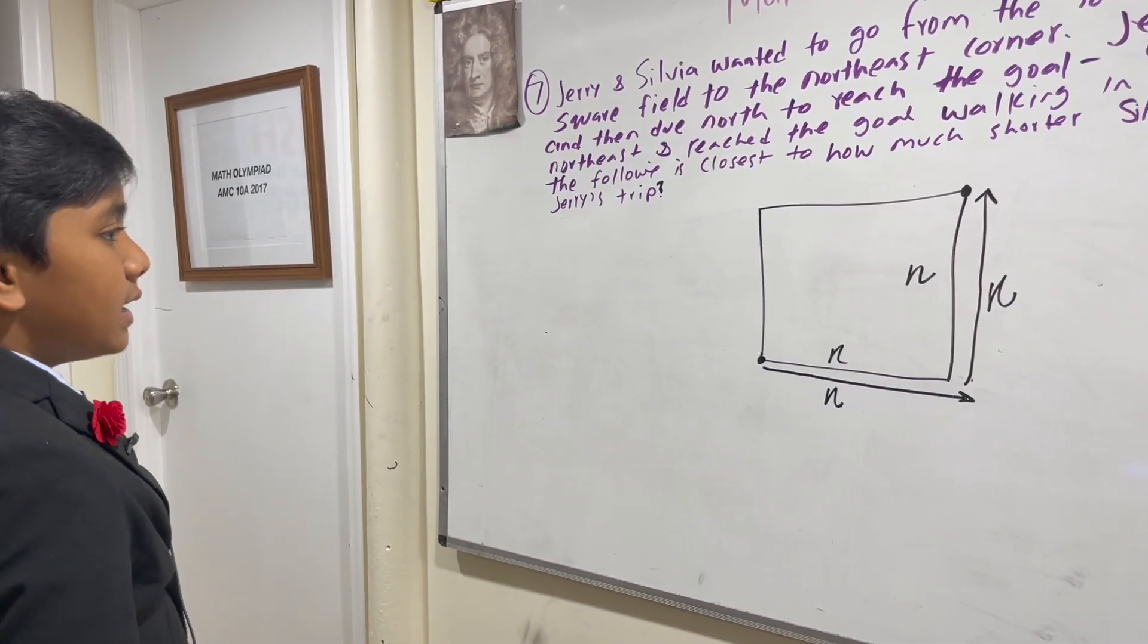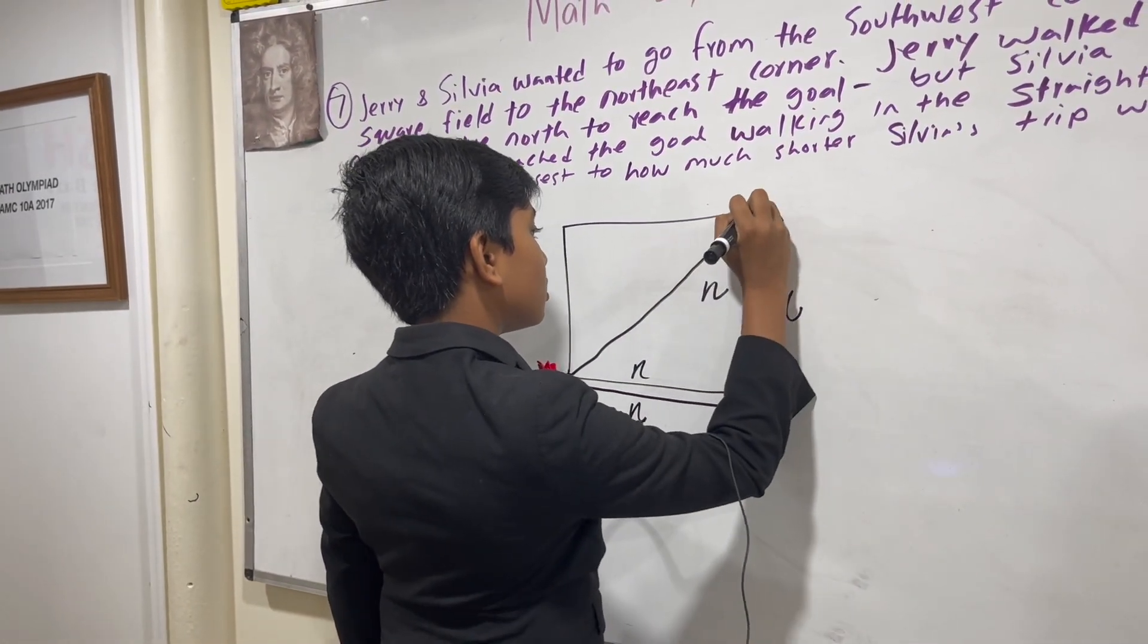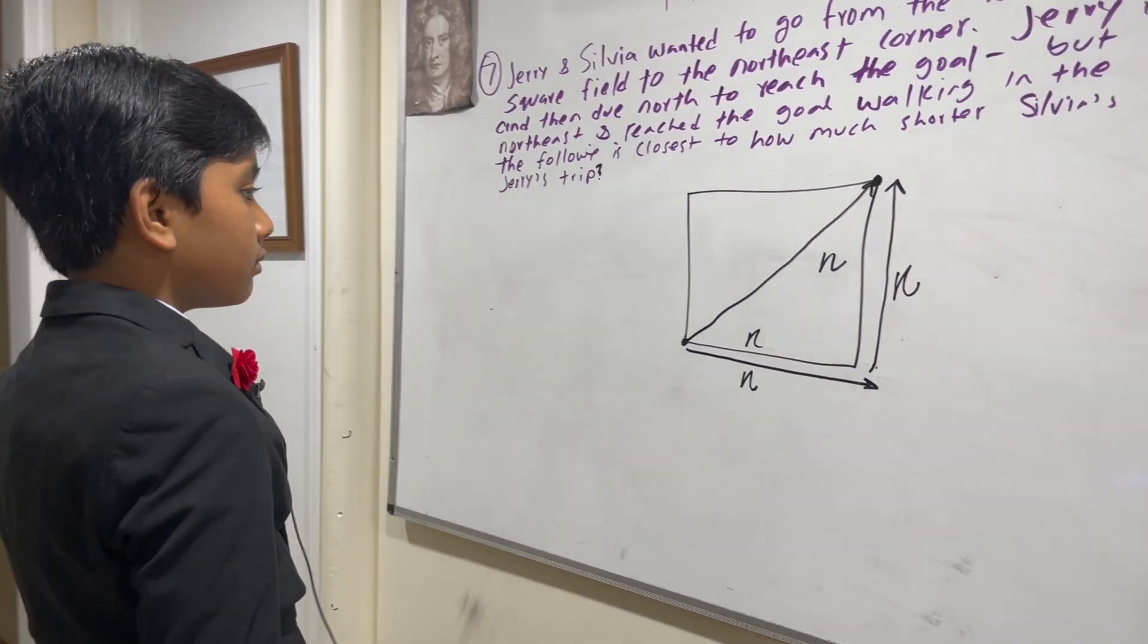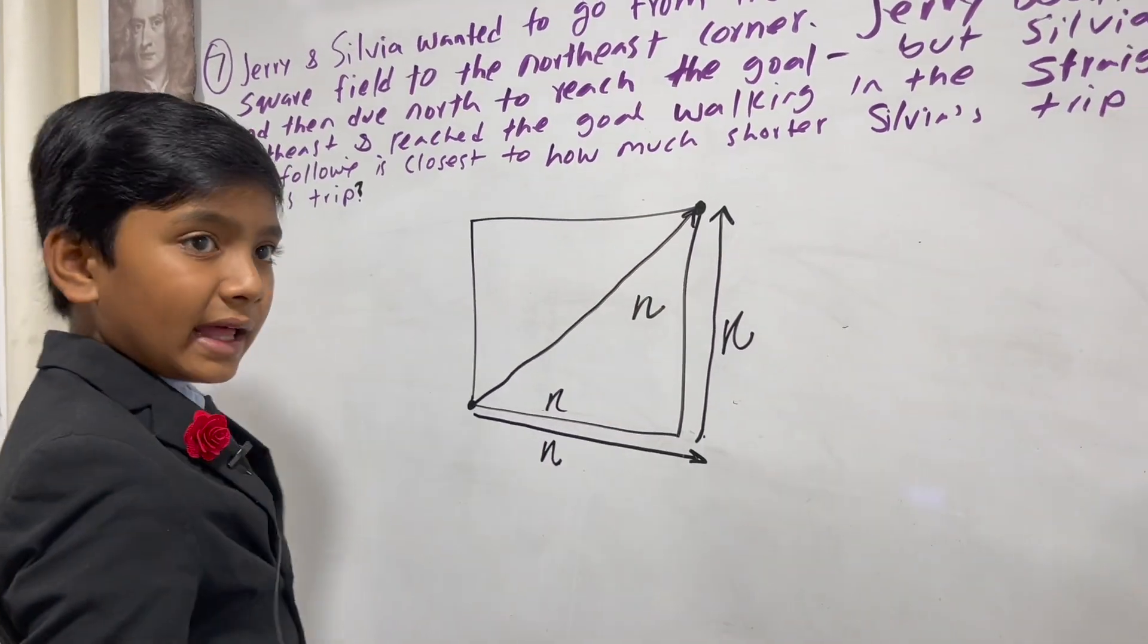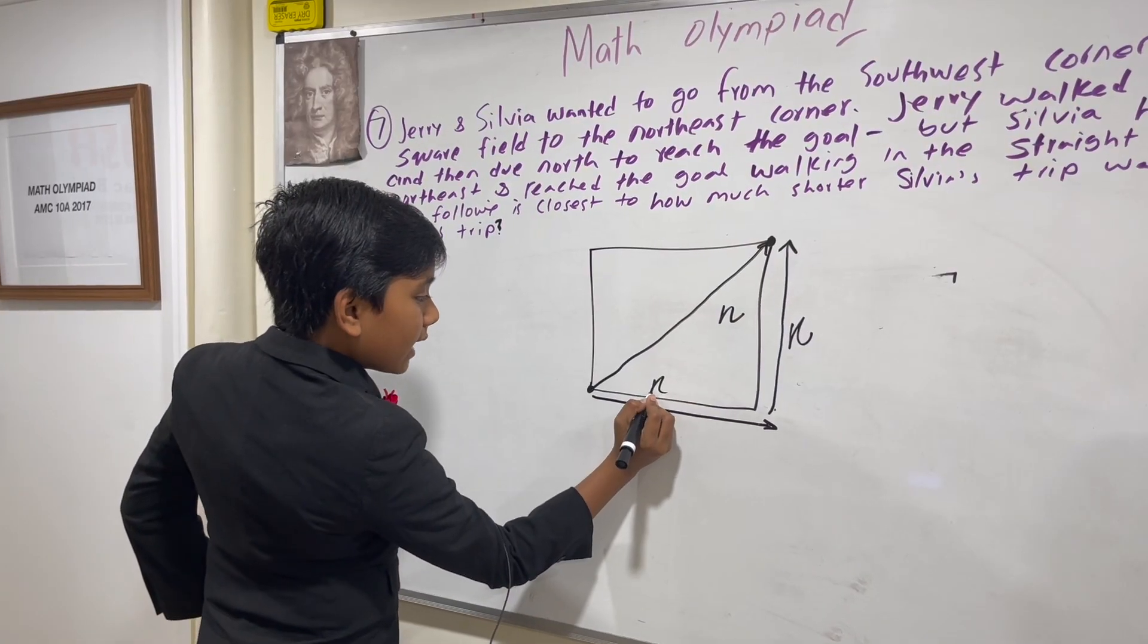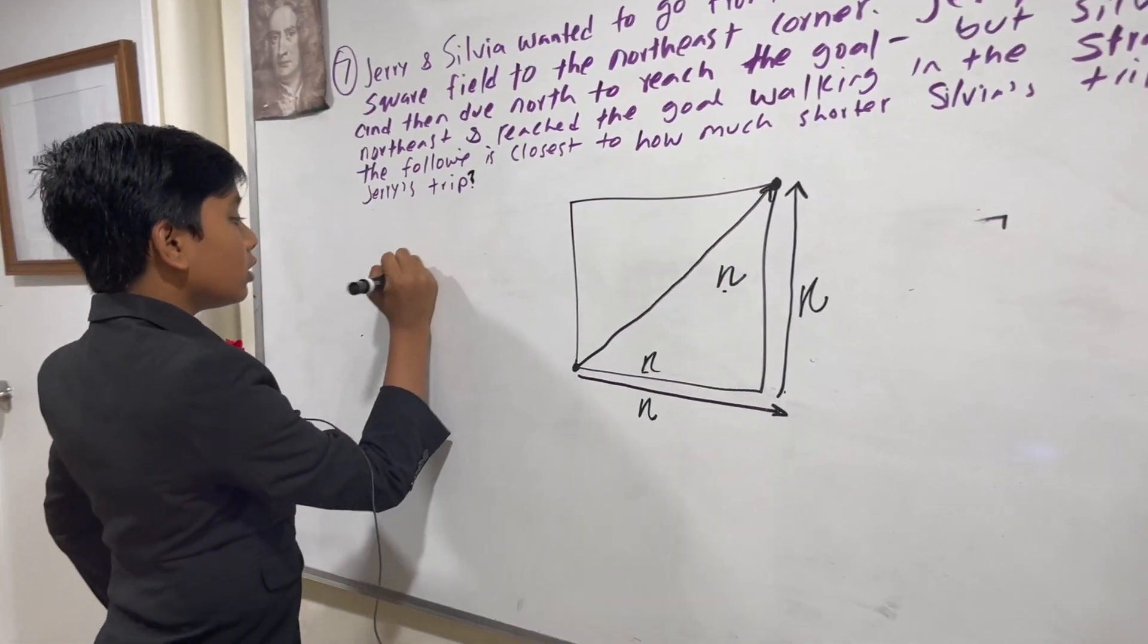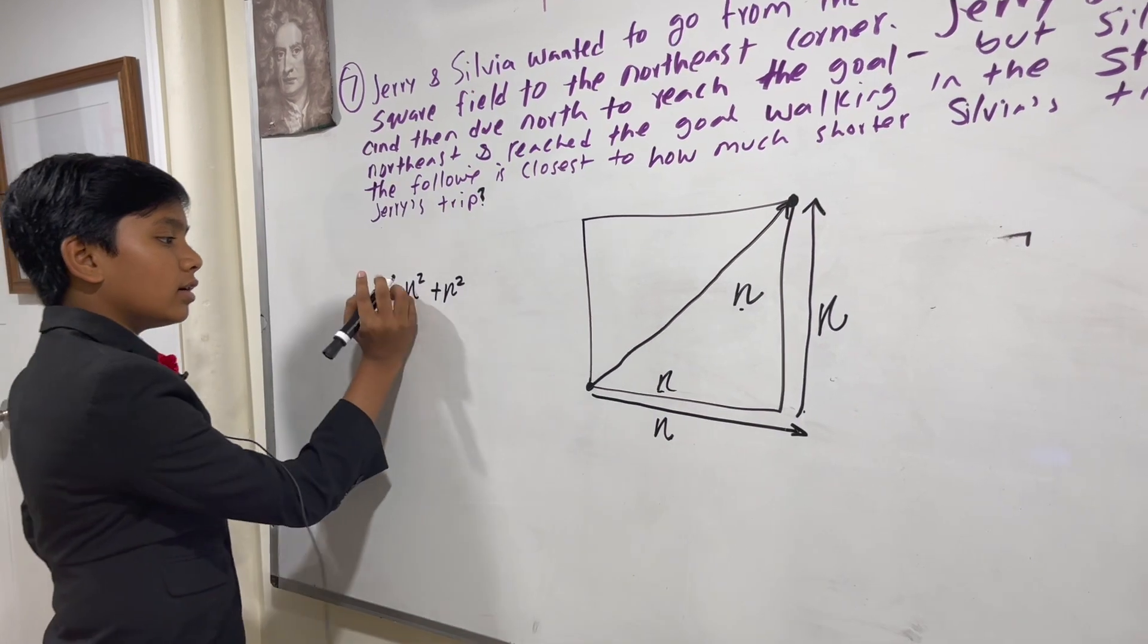While Sylvia headed northeast on the square's diagonal, that means we can find this length using the Pythagorean theorem. This is N, this is N, so that would be N squared plus N squared, and by the Pythagorean theorem,